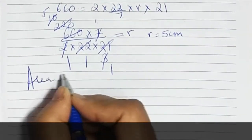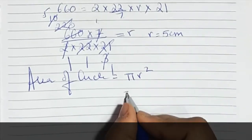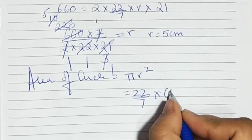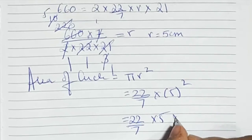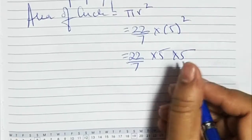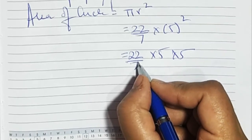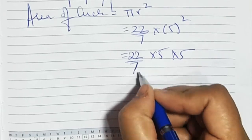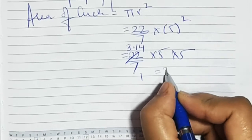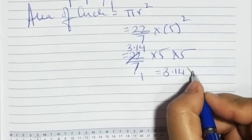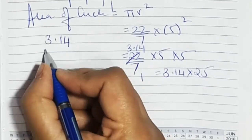Now if r is 5, we use the area of circle formula. Area of circle is πr², that is 22 upon 7 into 5 squared, which is 22 upon 7 into 5 into 5. That gives us 3.14 into 25. Let's work it out: 3.14 into 25.